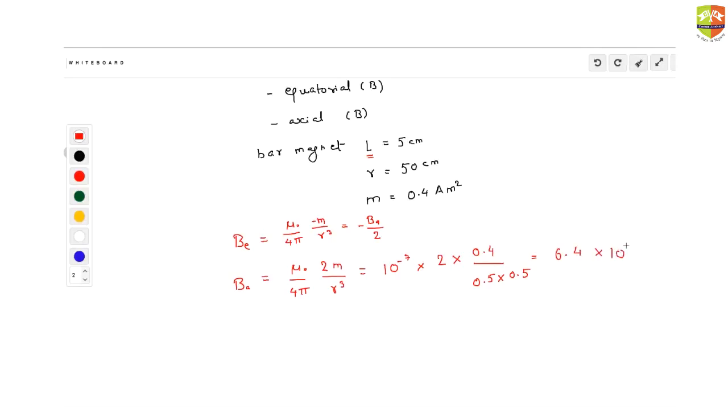Equatorial will be 3.2 into 10 raised to power minus 7 Tesla. It is half of it. Like this, you can do these simple straightforward ones.